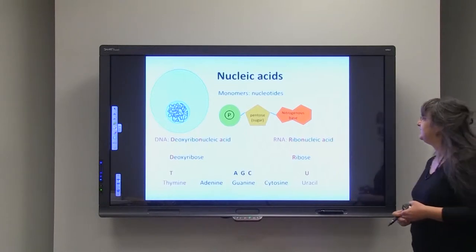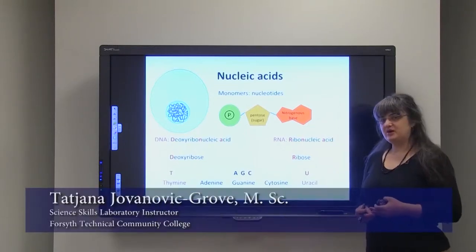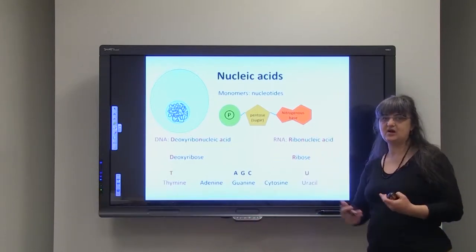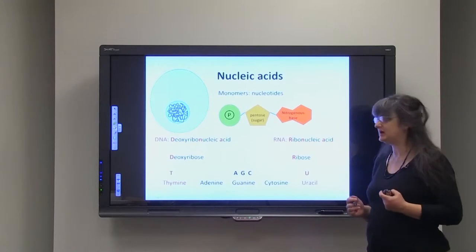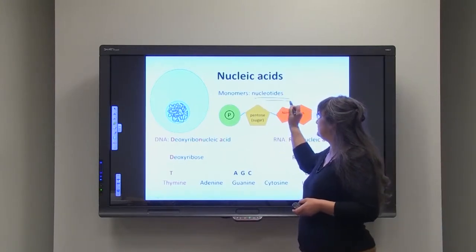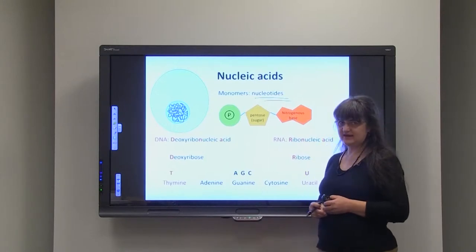Nucleic acids are macromolecules that are polymers. Polymers means that their components are monomers and they have something in common. Nucleotides are the monomers of the nucleic acids.